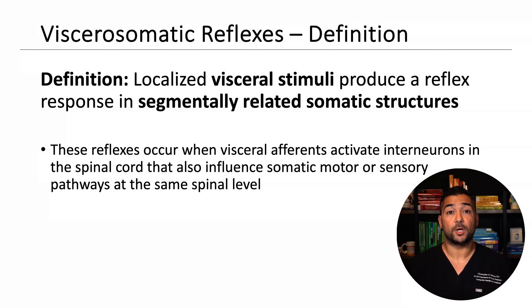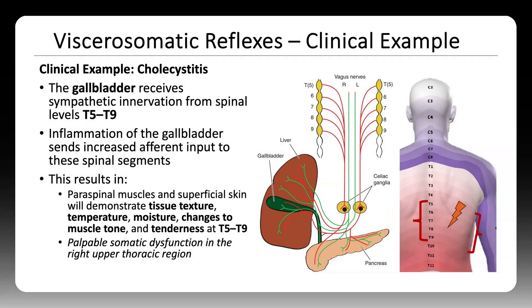A viscerosomatic reflex occurs when visceral input, such as from an inflamed organ, produces a somatic response like increased muscle tension or tenderness in a segmentally related area. In cholecystitis, for example, the gallbladder receives its sympathetic innervation from and sends corresponding increased afferent signals to spinal segments T5 through T9. This may result in reflex muscle hypertonicity, changes in temperature or moisture, and tenderness over the right upper thoracic region at the T5 to T9 levels — the physical signs of a viscerosomatic reflex.